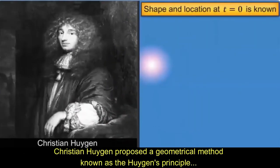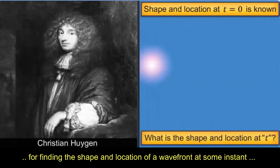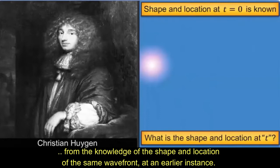Christiane Huygens proposed a geometrical method known as the Huygens Principle for finding the shape and location of a wavefront at some instant from the knowledge of the shape and location of the same wavefront at an earlier instance.